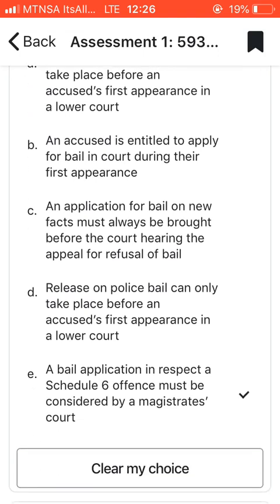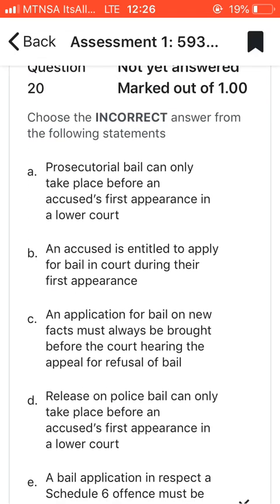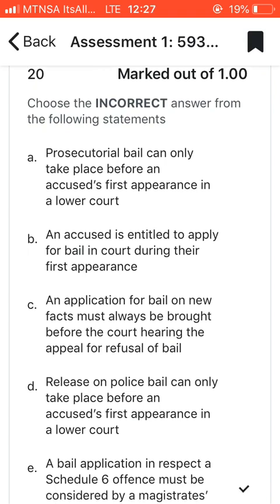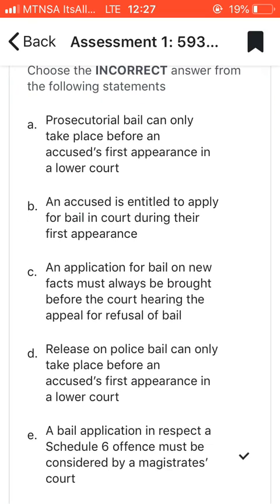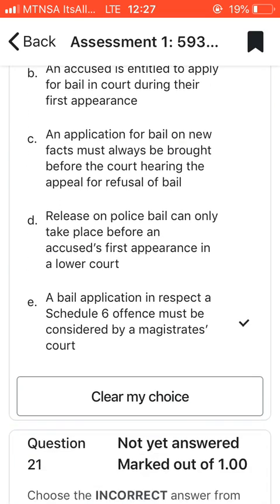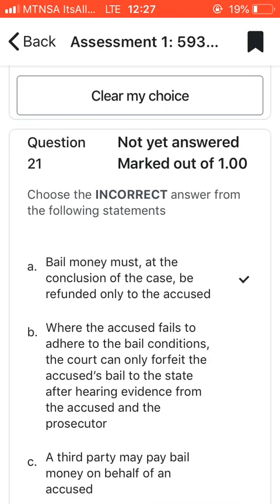Question twenty: choose the incorrect answer. I went with E, which says that a bail application in respect of a schedule 6 offense must be considered by a magistrate's court. Schedule 6 is an upper-level offense, and the other options like B — that an accused is entitled to apply for bail — were making sense. So E was not correct.